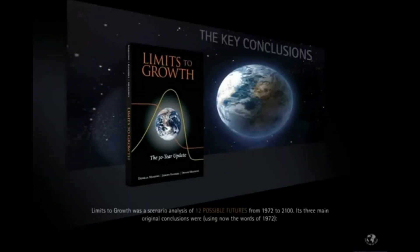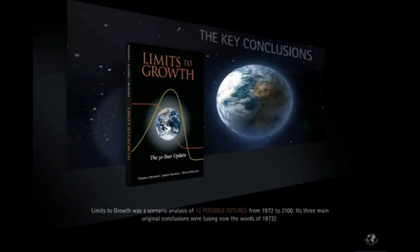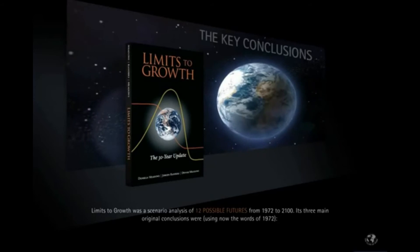Chapter 2: The Key Conclusions. Limits to Growth was a scenario analysis of twelve possible futures, from 1972 to 2100. Its three main original conclusions were, using now the words of 1972.